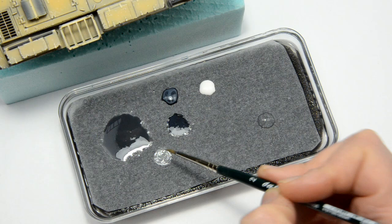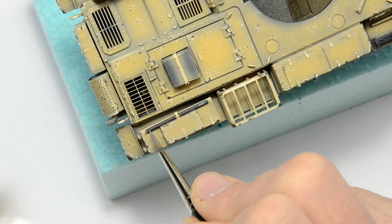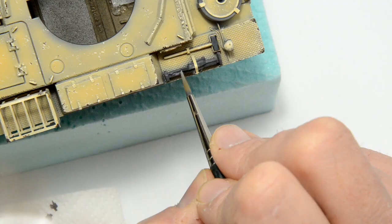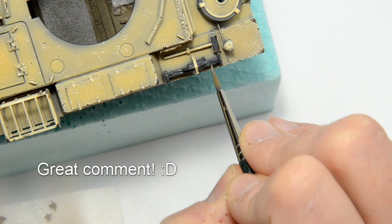For the other metal elements the shade is not so important. Just be sure to cover everything. At the end I made a lighter mix and thinned it with water. I made some light stains on all the metal elements. I skipped the guns and the rubber wheels.